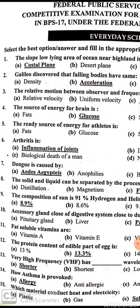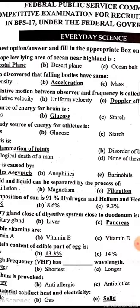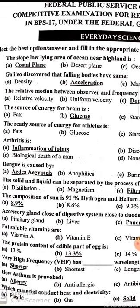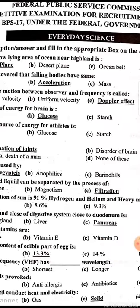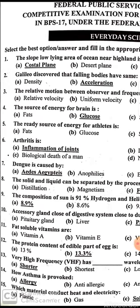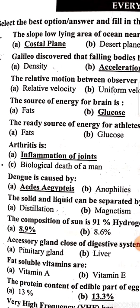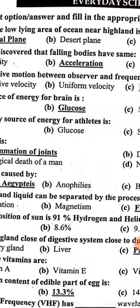The slow low-lying area of ocean near highland is a coastal plain. Galileo discovered that falling bodies have the same acceleration. The relative motion between observer and frequency source is called the Doppler effect.